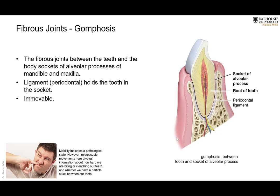The third fibrous joint type is the gomphosis — the joint between the tooth and its bony socket, which is present in the alveolar process of either the mandible or the maxilla. The tooth is connected to the bone by a fibrous ligament called the periodontal ligament. This joint is immobile, or has only a very minor, microscopic degree of mobility, which is important for sensing bite pressure and detecting objects between the teeth.